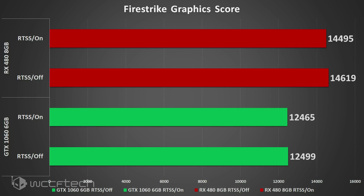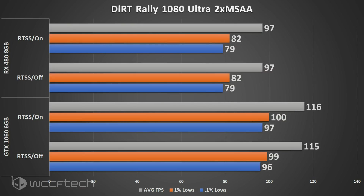What about in actual games? Jumping into Dirt Rally first — looking at the graphs you'll see the 1060 and the 480 are separated with RTSS on and off, because again I didn't want you comparing the cards specifically but rather the impact of running the overlay. Here we see nothing really; it's all margin of error. The 480 was actually hyper-consistent and got the same numbers, so not a whole lot going on here.